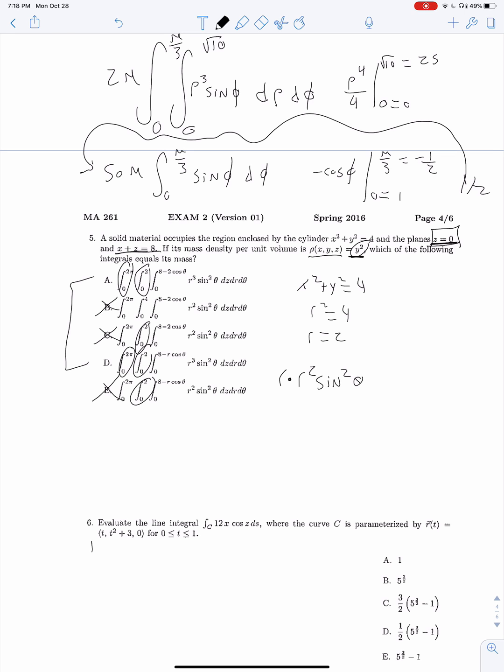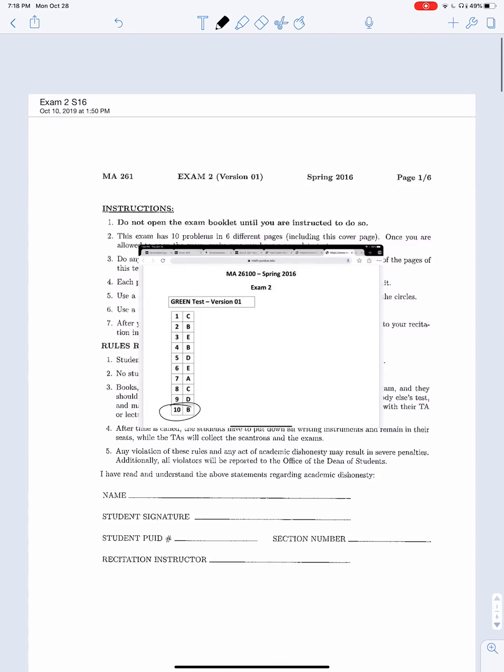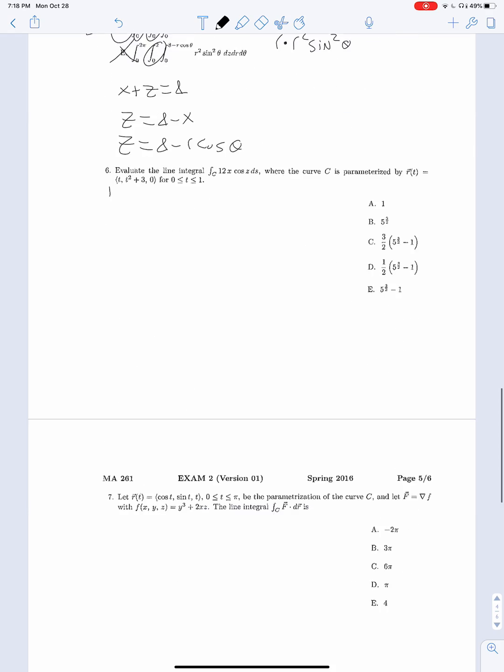We're looking for our bounds for z. We know that z's floor should be 0. From x plus z equals 8, we get z equals 8 minus x, which is z equals 8 minus r cosine of theta. And there we go.